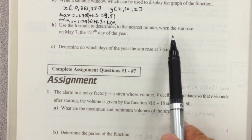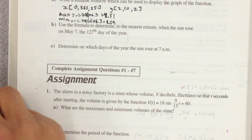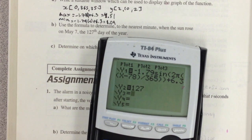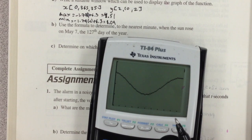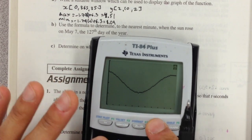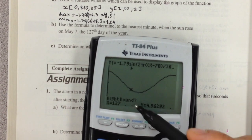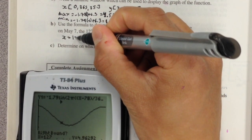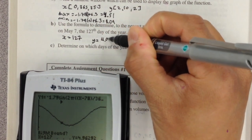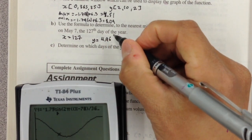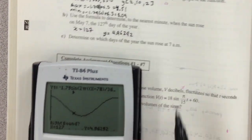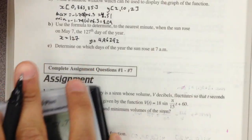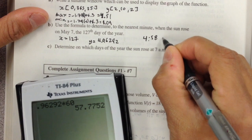Use the formula to determine to the nearest minute when the sun rose on May 7th, the 127th day of the year. I have my graph here, and we want to know where it intersects at 127, the 127th day of the year. I use my x, or my 0 function, and when x = 127, y = 4.96. So that's 4.96292, and 0.96292 times 60 is 58 minutes, so 4:58 a.m.